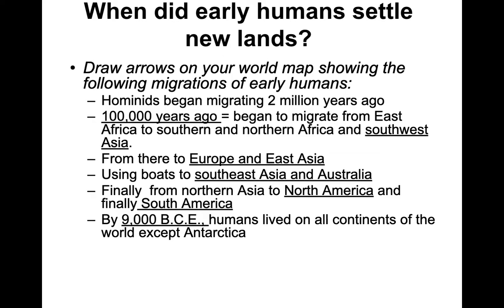About 100,000 years ago we really start to migrate out of Africa, though some archaeological finds suggest it may have been even sooner. We went from East Africa to Southern and Northern Africa, then from Northern Africa to Southwest Asia — what you might know as the Middle East. From there we went to Europe and East Asia, and then using boats or natural land bridges created by the ice age, we got to Australia, Polynesia, and those islands.